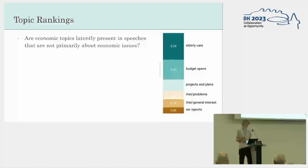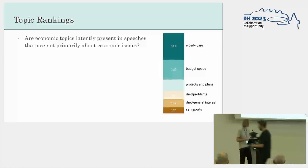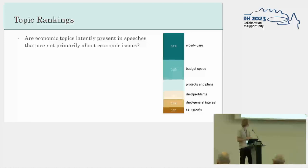The first method is looking at topic rankings. The question here is: are economic topics latently present in speeches that are not primarily about economic issues? To the right you see the distribution of some of the top topics in a speech — the speech is clearly about elderly care for about a third of the text. And that's usually what you take for granted: you say this speech is about elderly care. But if you look below the surface, in this case visually,